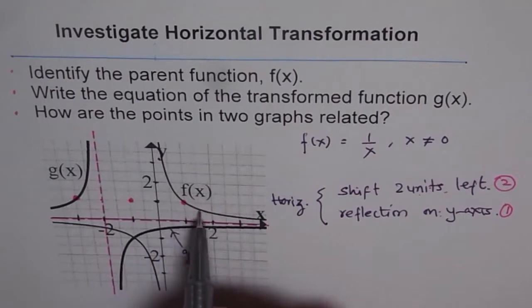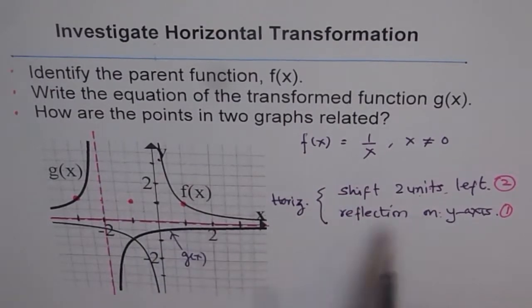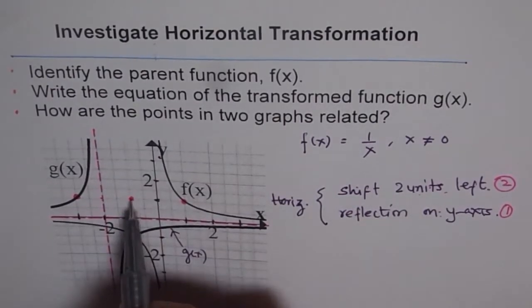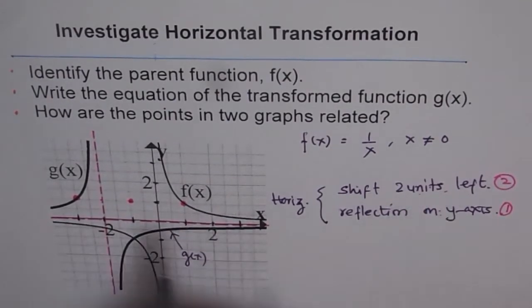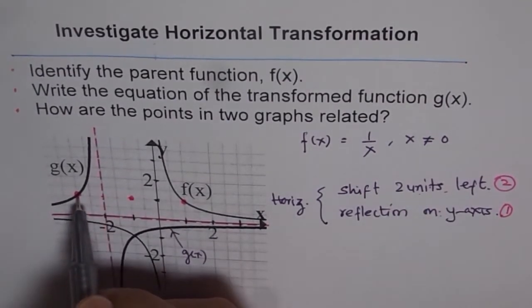So that means there is no stretch. Do you see that? Do you understand? My point was (1,1) on the main function. So I know there is a reflection, so I reflected this point first. I have to do this first and then two units left.